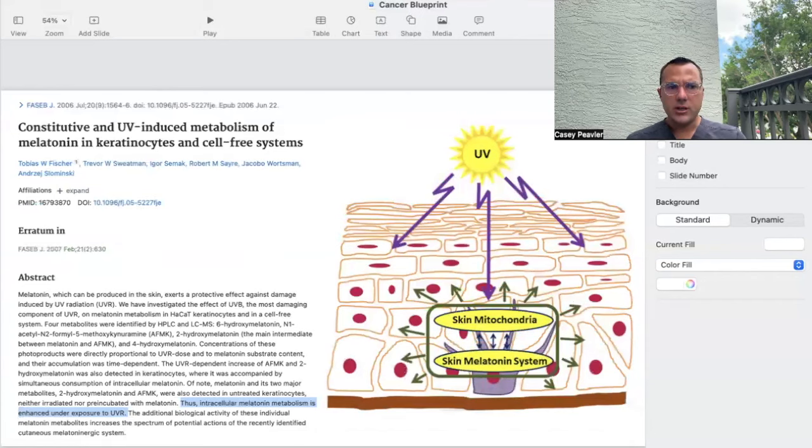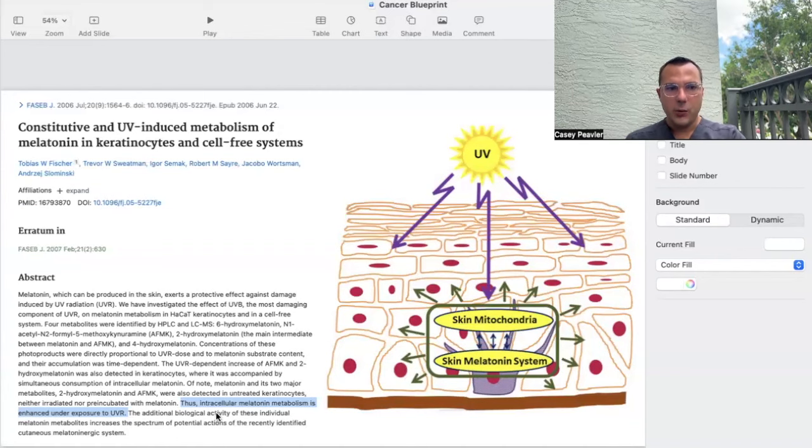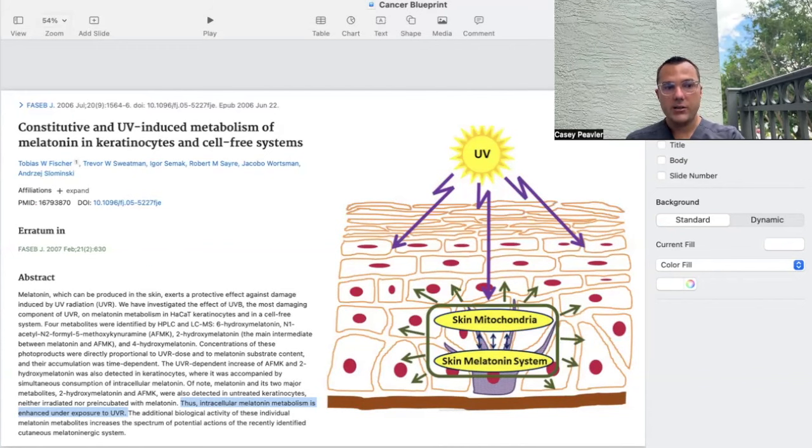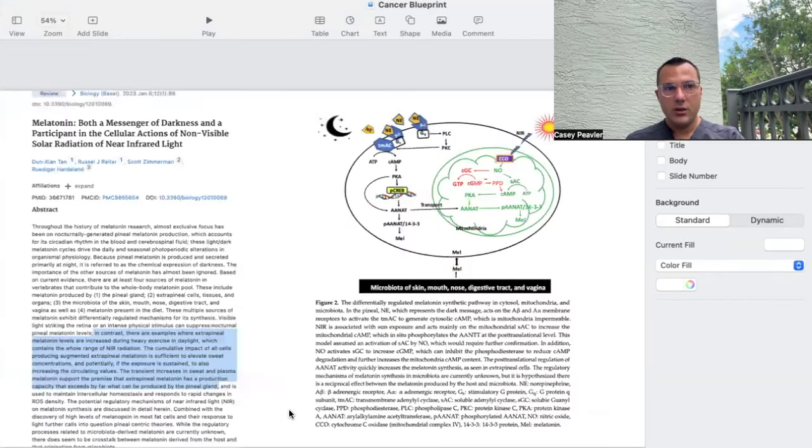The reason I bring up light spectrums is twofold. Number one, it's been shown that UV radiation or UVB will increase your body's production of melatonin. As a matter of fact, some of the major melatonin metabolites - 6-hydroxymelatonin, AFMK, 2-hydroxymelatonin, 4-hydroxymelatonin - these are all intermediates that can be found in skin cells and in the urine of patients who are exposed to UV radiation, which is pretty cool. The question is - an open-ended question that no one knows at this point - is how much of the melatonin is from UV? That is an open-ended question.